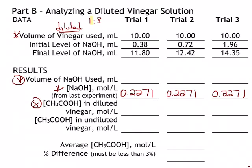The volume of base used should be straightforward. The final burette level was 11.80 mL minus the initial level of 0.38 mL, so this person used 11.42 mL of base.